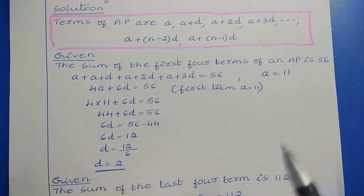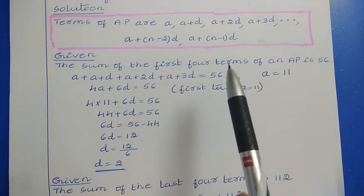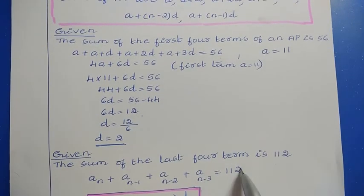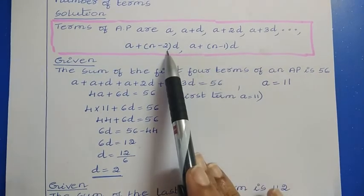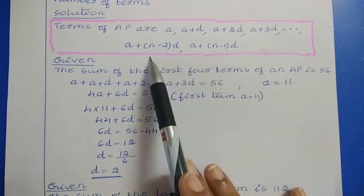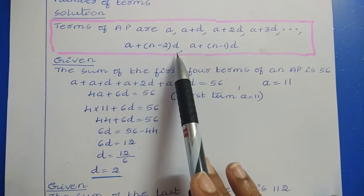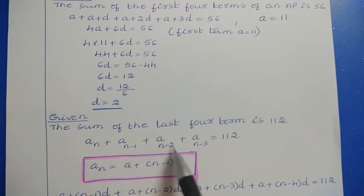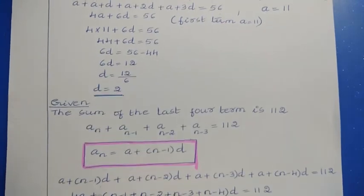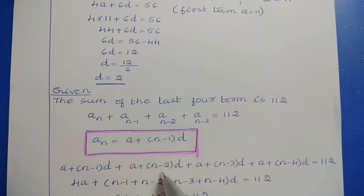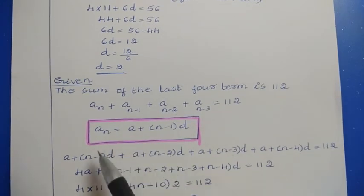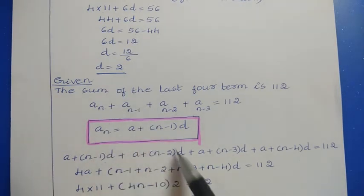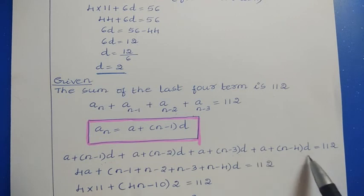The last four terms are A plus (N minus 1)D, A plus (N minus 2)D, A plus (N minus 3)D, and A plus (N minus 4)D. Their sum equals 112. Simplifying: 4A plus (4N minus 10)D equals 112. Substituting A equals 11 and D equals 2: 44 plus (4N minus 10)×2 equals 112, giving 44 plus 8N minus 20 equals 112.